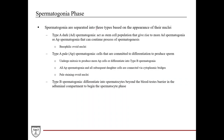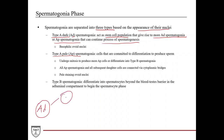Spermatogonia are separated into three types based on the appearance of their nuclei. First, you have Type A dark (AD) spermatogonia, which act as a stem cell population and give rise to more Type A dark spermatogonia or Type A pale (AP) spermatogonia, which can continue the process of spermatogenesis. The pale cells are committed to differentiation to produce sperm.